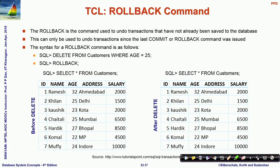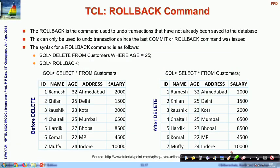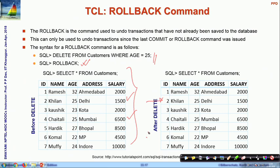Rollback undoes transactions — changes not yet saved to the database can be rolled back, but only back to the last commit or last rollback command. Using the same customer example: after deleting two records, issuing a rollback instead of commit undoes those deletions. The two records return to the table, and a subsequent select shows all records back in the list.